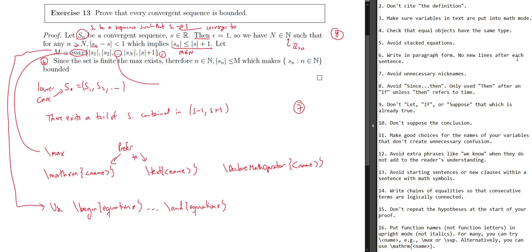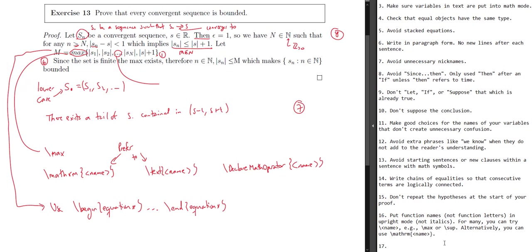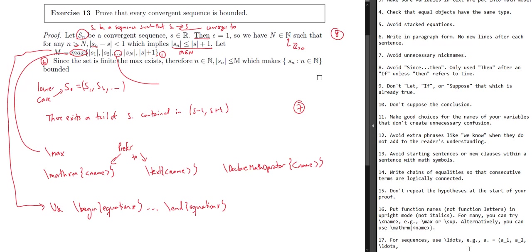When we're dealing with sequences, we're going to want to use dot-dot-dot a lot. The correct way to do that — these are called ellipses — for sequences use \ldots. Don't actually literally type dot dot dot. So for example, if you have a dot equals a1, a2, \ldots — you'll see I do comma space then \ldots, and that's going to give us a nice-looking ellipsis.